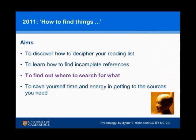So in 2011, when it was still called 'How to Find Things on Your Reading List,' these were the four aims of the session: discover how to decipher your reading list, finding complete references, find out where to search for what. That last one is bolded because it took up 90% of the session — it was a sort of awful guided tour around all the proxy interfaces. Everyone comes out getting really depressed. Part of it is about knowing the right place to go to save time and energy, but it's not a great sales pitch, let's face it.